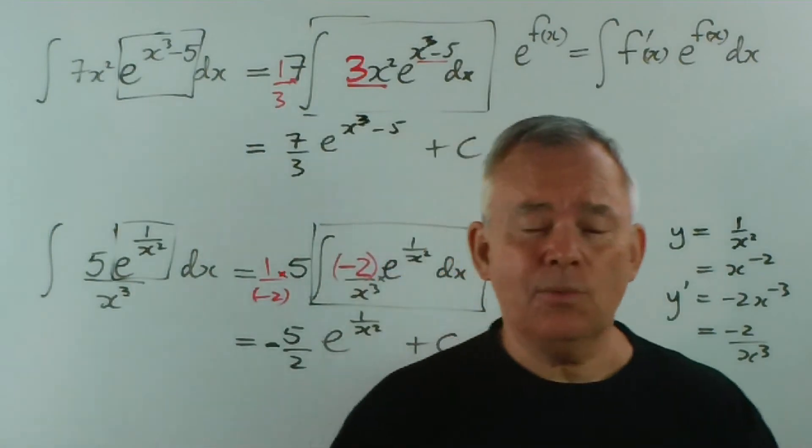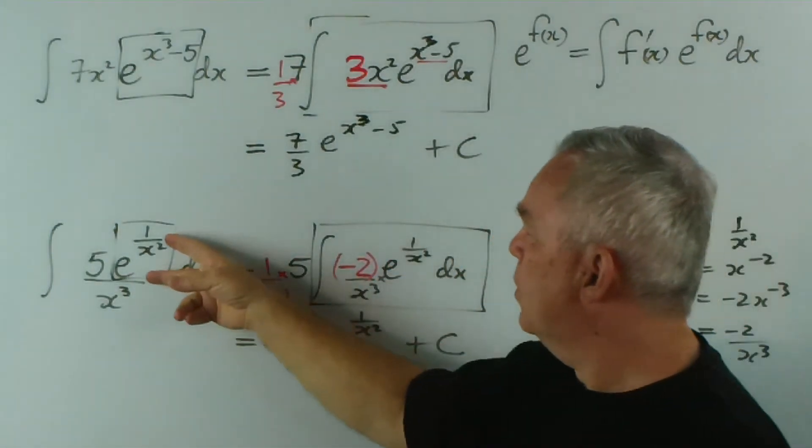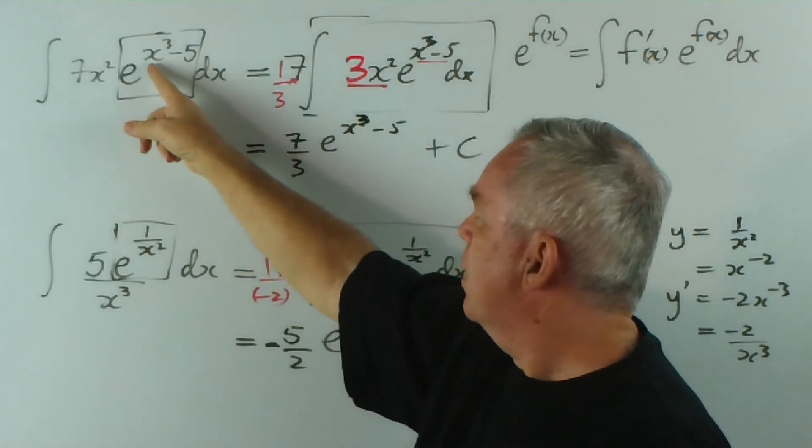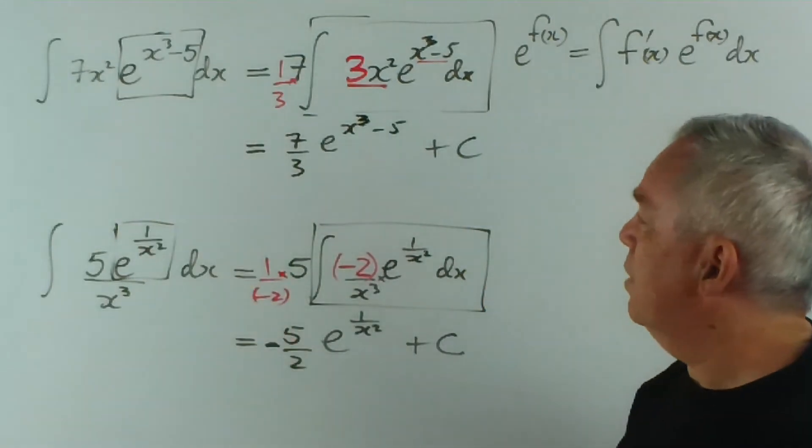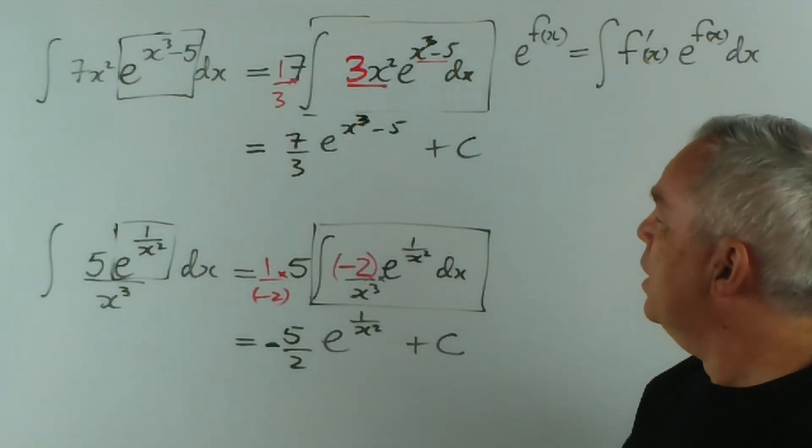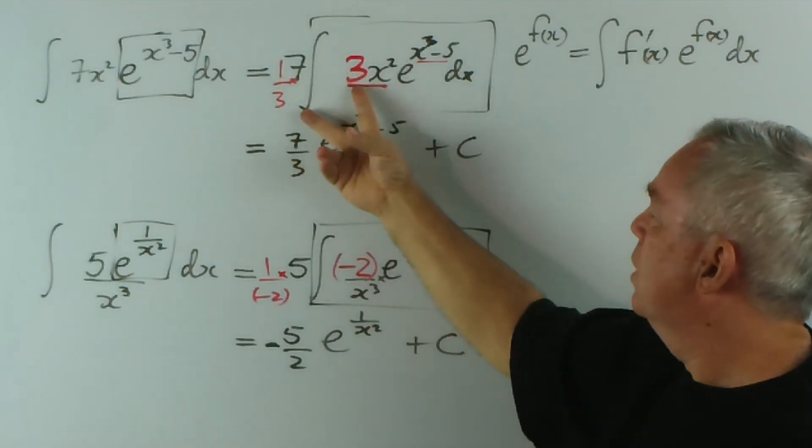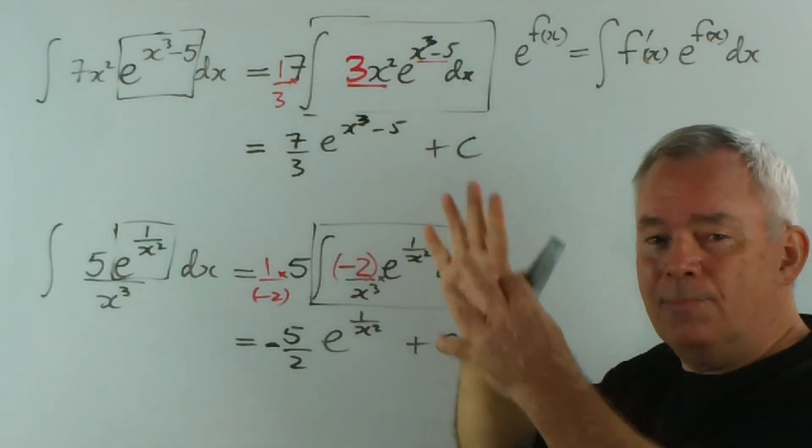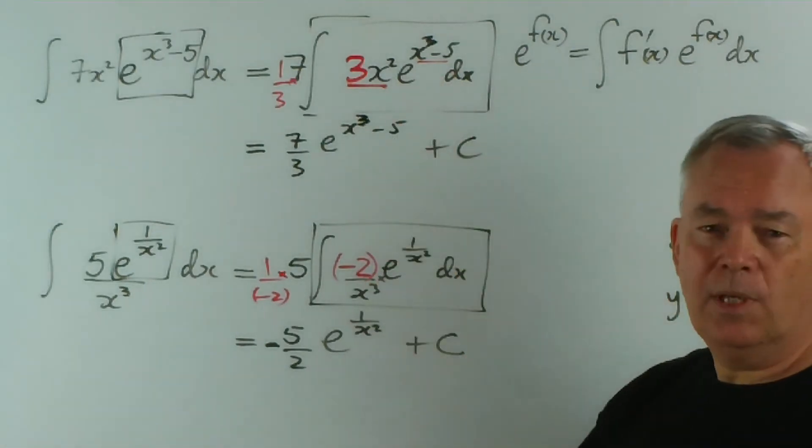And basically that's what you're looking for for all of your exponential functions when you're integrating them. You're looking to have the function there and its derivative out the front. And all it involves is manipulating the constants, removing the one you don't want, making a compensatory adjustment, and then using the pattern to perform the integration.